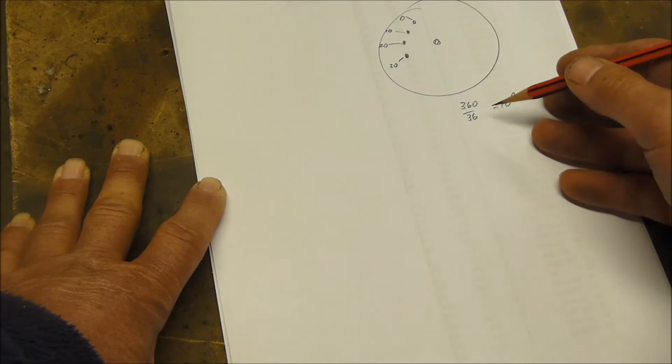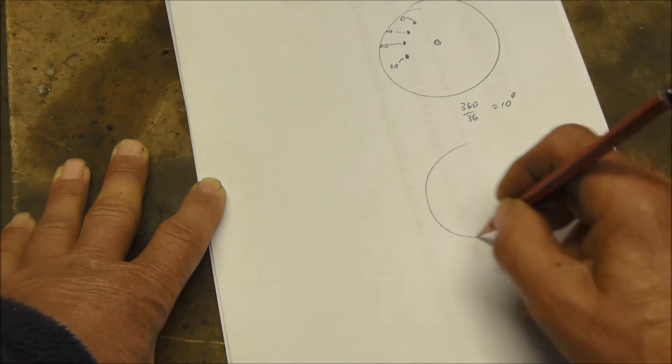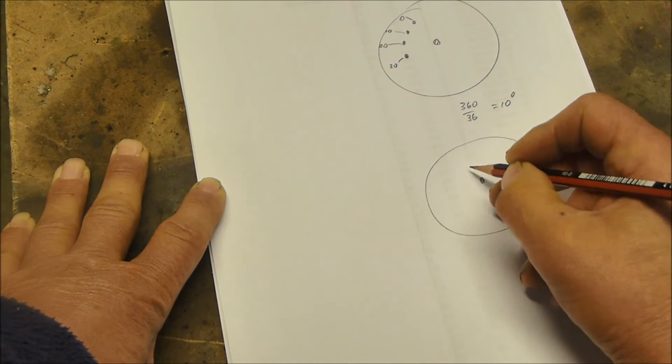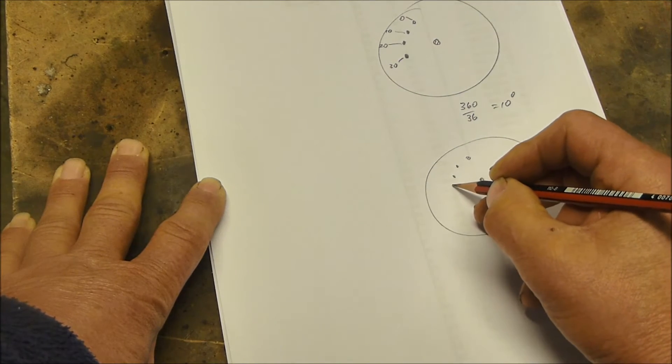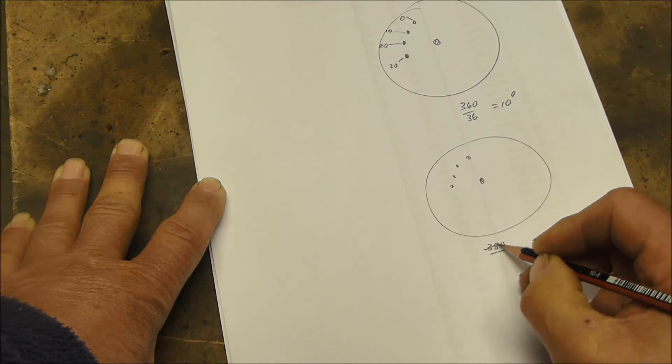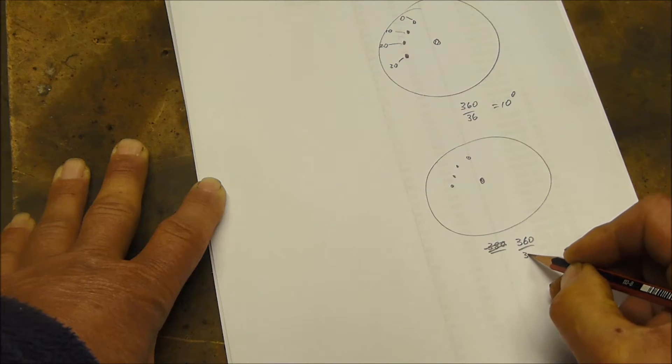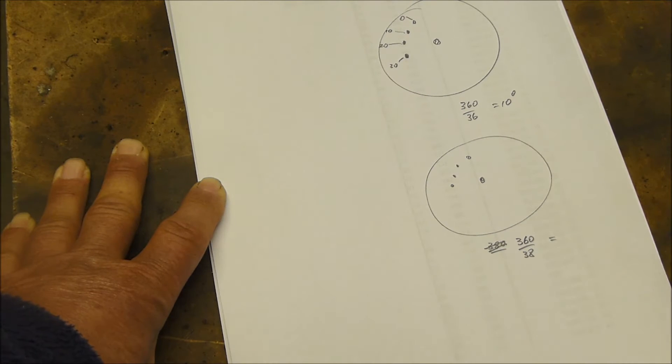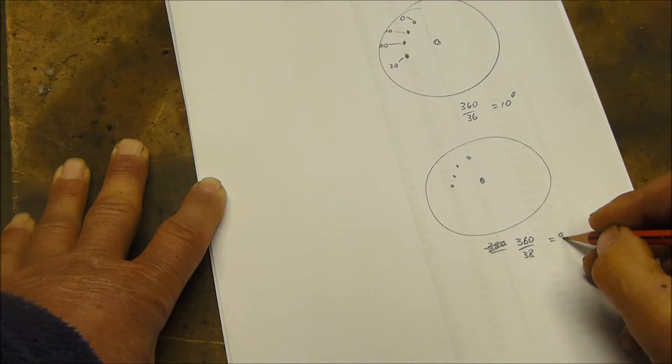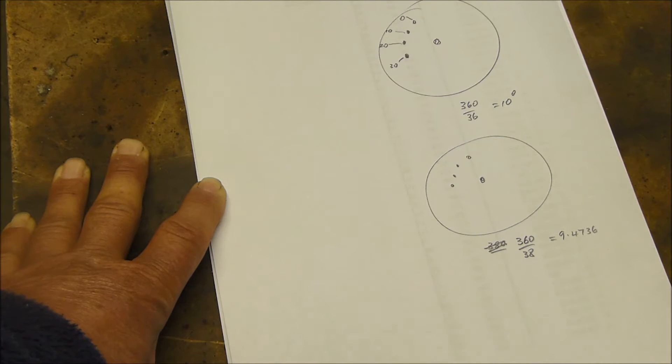But what happens if we want to drill a series of holes that doesn't divide into 360 evenly, for example, 38. So we want to drill 38 holes in our table. 360 divided by 38 does not come to an even number. In fact, it comes out to 9.4736 with a whole lot of extra decimal places.